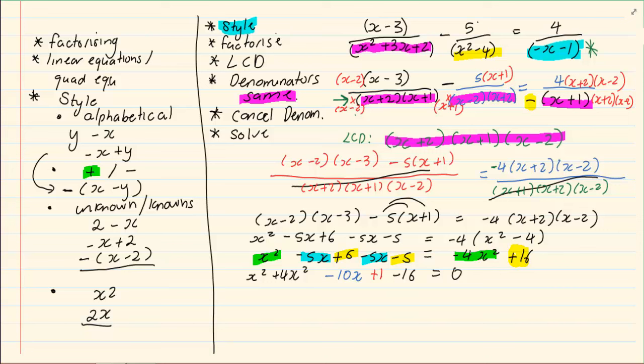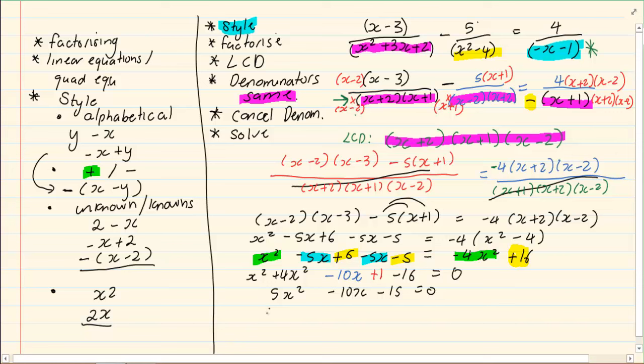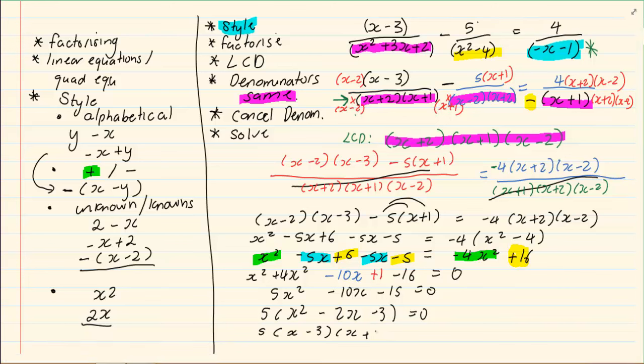So, we now have 5x squared minus 10x minus 15 is equal to 0. If we take out a common 5, we're left with x squared minus 2x minus 3. When we factorize, we've got 5, x minus 3, x plus 1 is equal to 0.